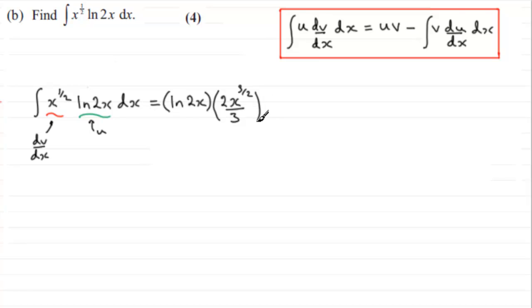So we've got u times v. Then it's minus the integral of v - v is this part - so we just copy that in: two thirds x to the power three over two.